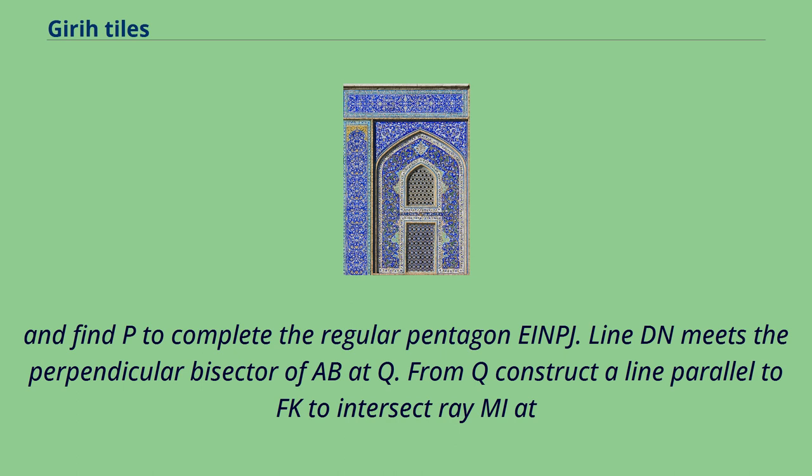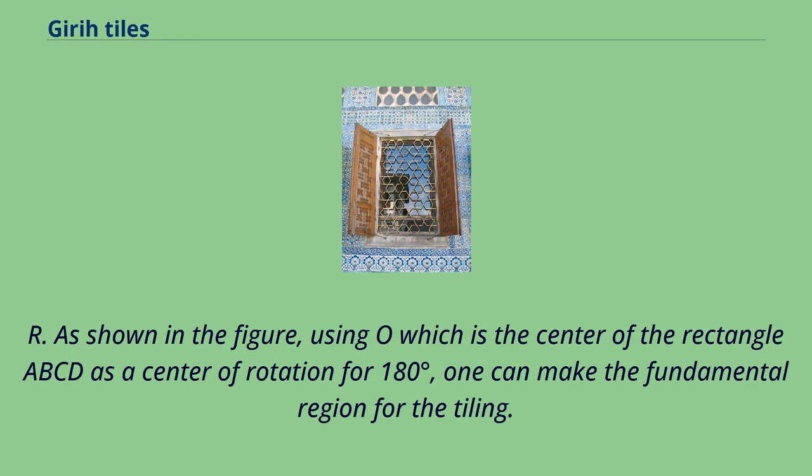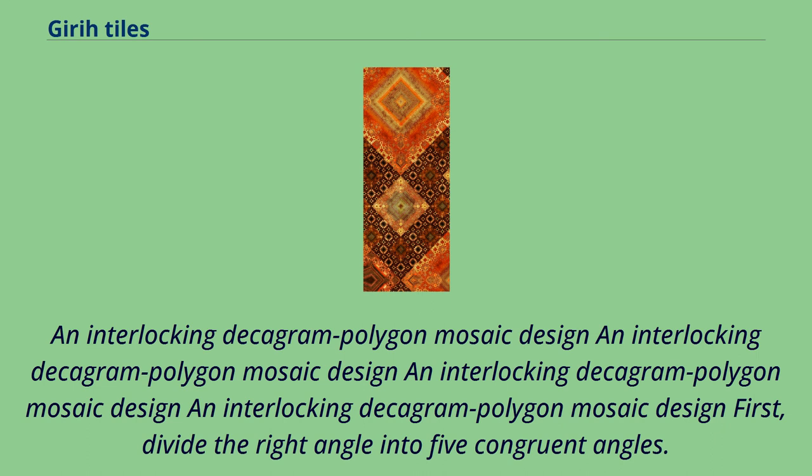From Q, construct a line parallel to FK to intersect ray ME at R. Using O, which is the center of rectangle ABCD as a center of rotation for 180 degrees, one can make the fundamental region for the tiling.